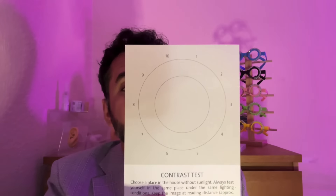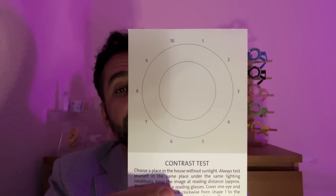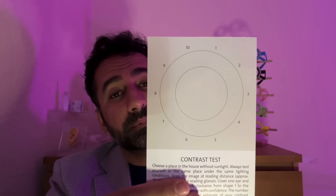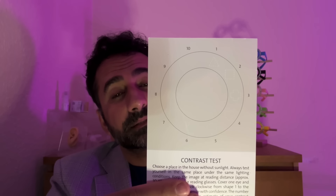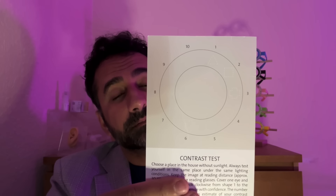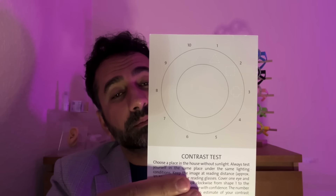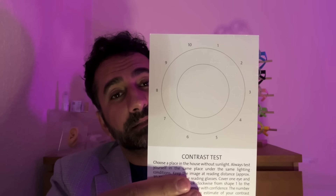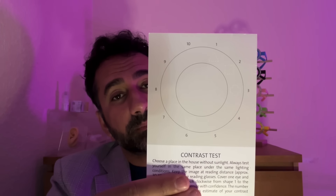Second is a contrast test. So we have a wheel here, sort of like a clock face. Next to each number is a shape or object. Starting at one, as far as you can, tell me which shape or object is next to each number please.